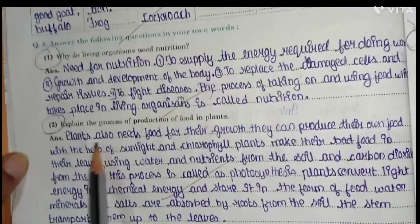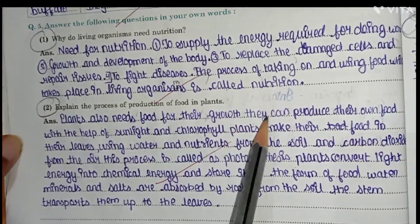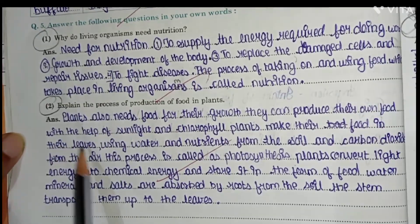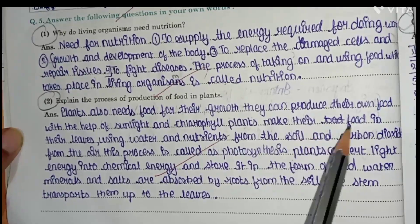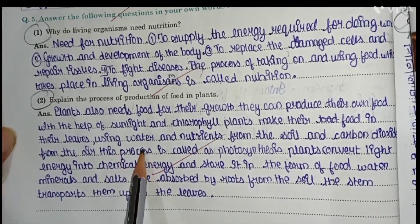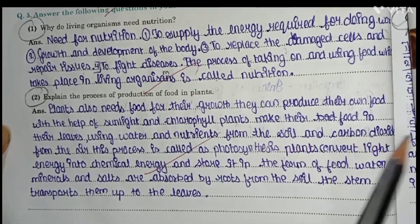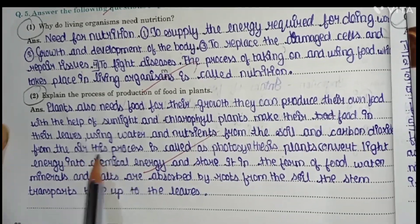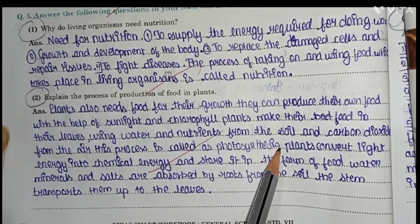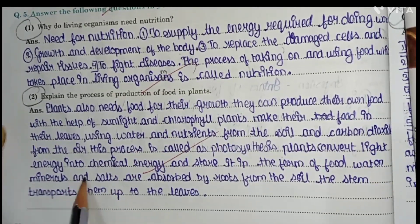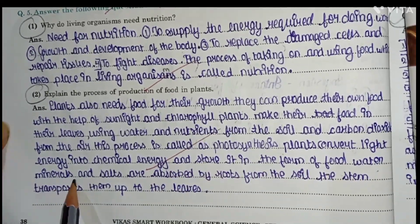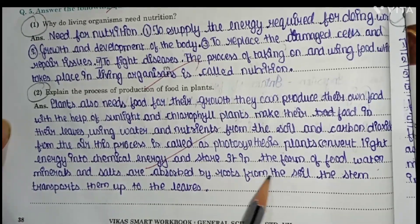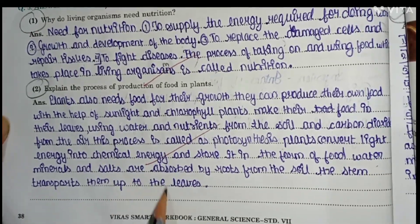Next question: explain the process of production of food in plants. Plants also need food for their growth. They produce their own food with the help of sunlight and chlorophyll. Plants make food in their leaves using water and nutrients from the soil and carbon dioxide from the air. This process is called photosynthesis. Plants convert light energy into chemical energy and store it as food. Water, minerals, and salts are absorbed by roots from the soil, and the stem transports them up to the leaves.